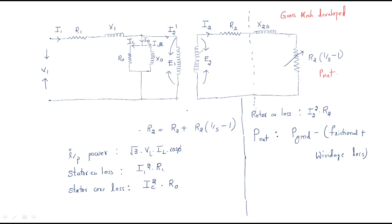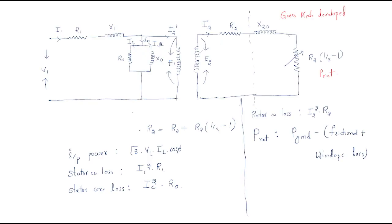This is the complete equivalent circuit. By using this complete equivalent circuit, we will draw the phasor diagram. We modified the rotor resistance into two combinations, and now we will move on to the complete phasor diagram using this equivalent circuit.